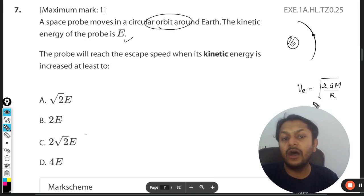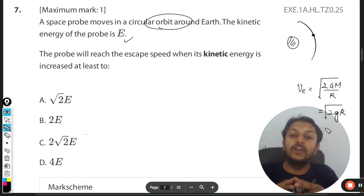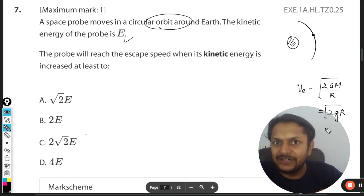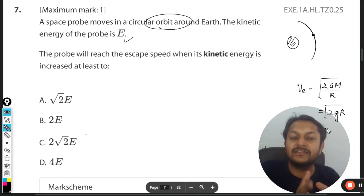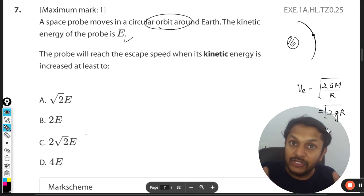But the expression that we usually use for the escape speed, which is root of 2GM by capital R or which can also be written as root of 2GR, this expression is to be used to find the escape velocity for the bodies which are placed on the planet. So the rocket should be resting on the planet surface. Then this formula is correct, otherwise this formula cannot be used directly.